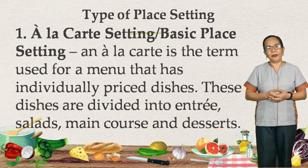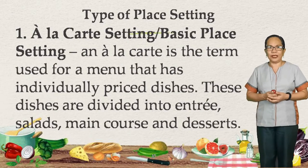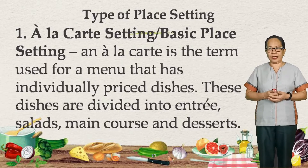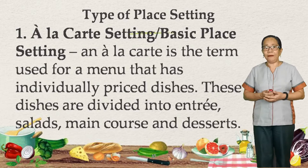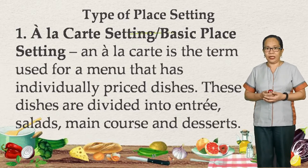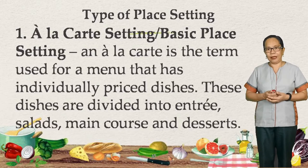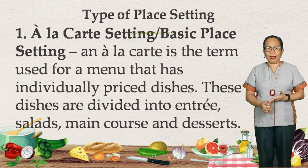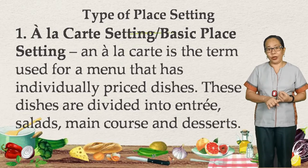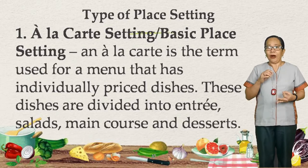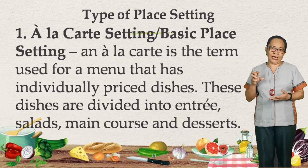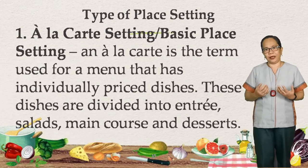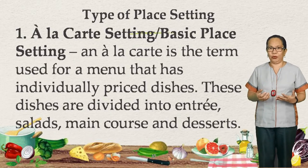What are the different types of place setting? The first one is the à la carte setting or the basic place setting. À la carte is the term used for a menu that has individually priced dishes. These dishes are divided into entrée, salads, main course, and desserts. In an à la carte setting, each item — whether salad, main course, or dessert — has its own separate price.